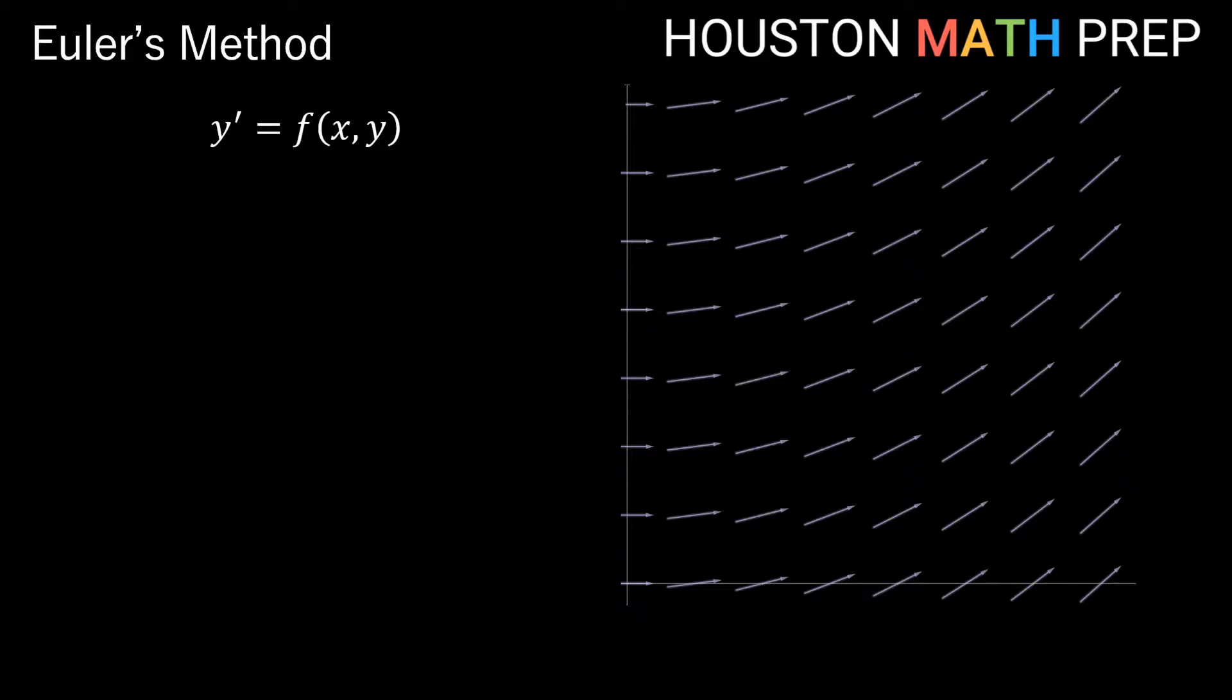So imagine that we have some kind of a slope field that represents our y' equals some expression involving x and y. And let's just imagine that our slope field represents some sort of a flowing river, and our initial condition is some cork that I drop in the river at some point. So let's say I pick a point and I drop an initial condition here at this point, and I want to know how will the position of my cork change as it flows through the water in this pattern according to my slope field.